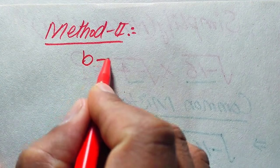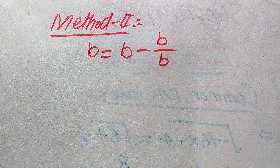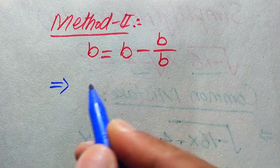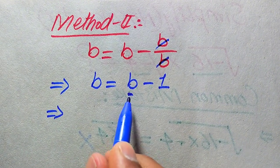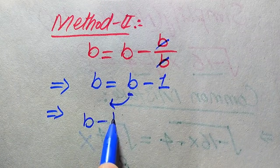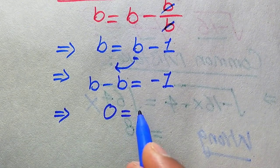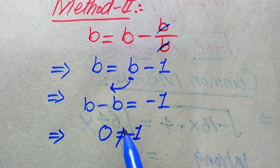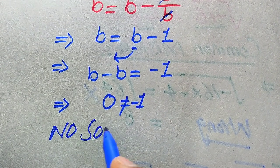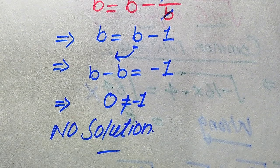Now we solve using the second method, which is the quick method. Starting from b = √(b minus b/b): the b and b inside cancel, giving b equals b minus 1. Moving b to the left side: b minus b equals minus 1, so 0 equals minus 1. This is impossible, so no value of b satisfies the equation. The equation has no solution. Thank you for watching — please subscribe to my channel for more videos.